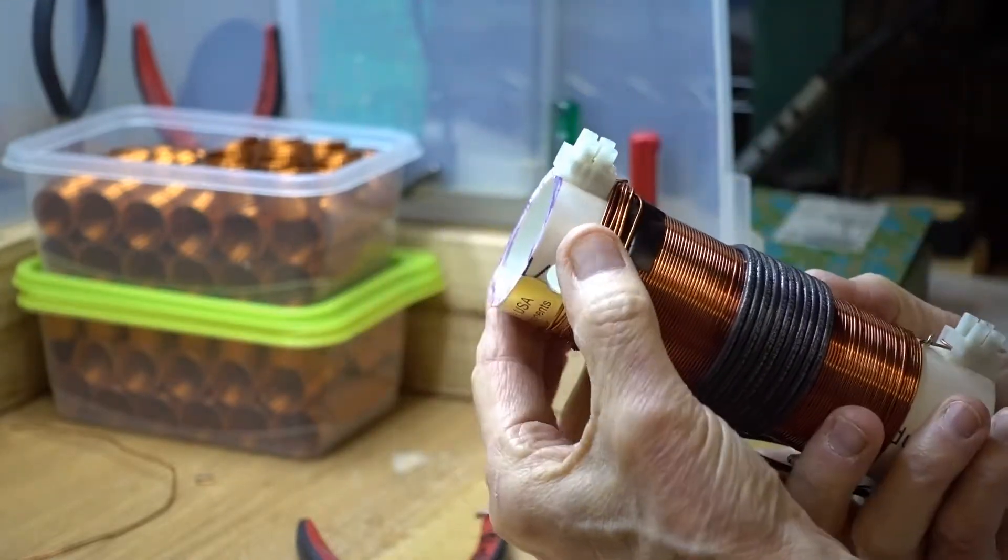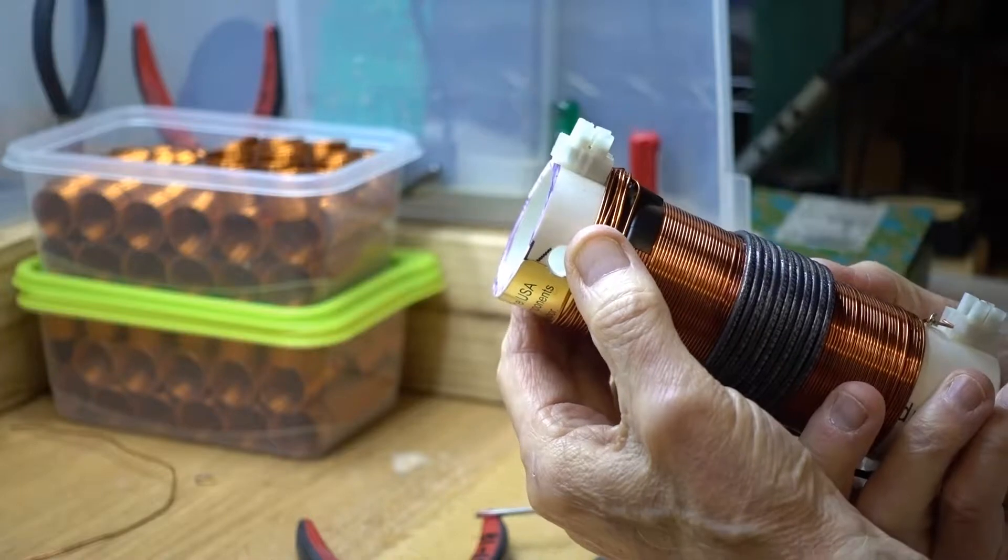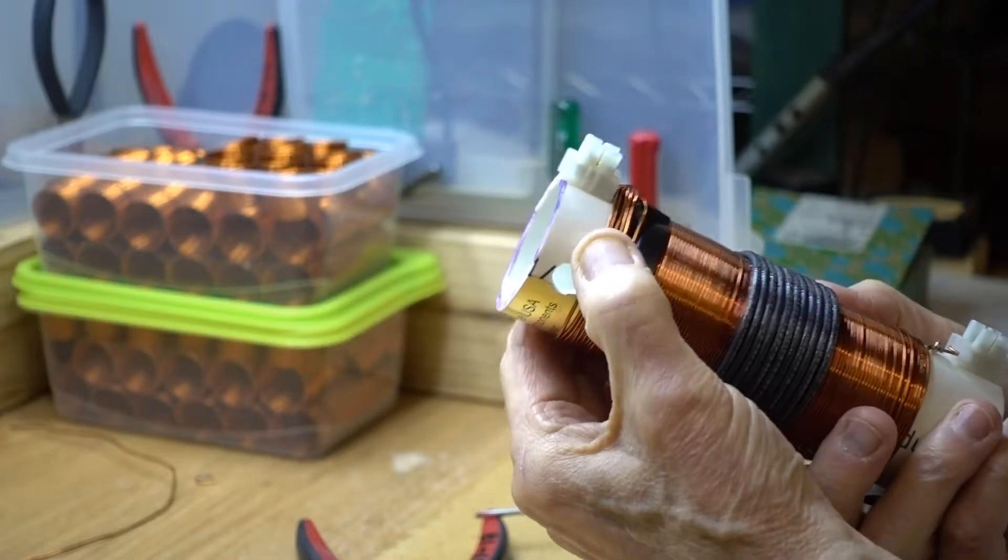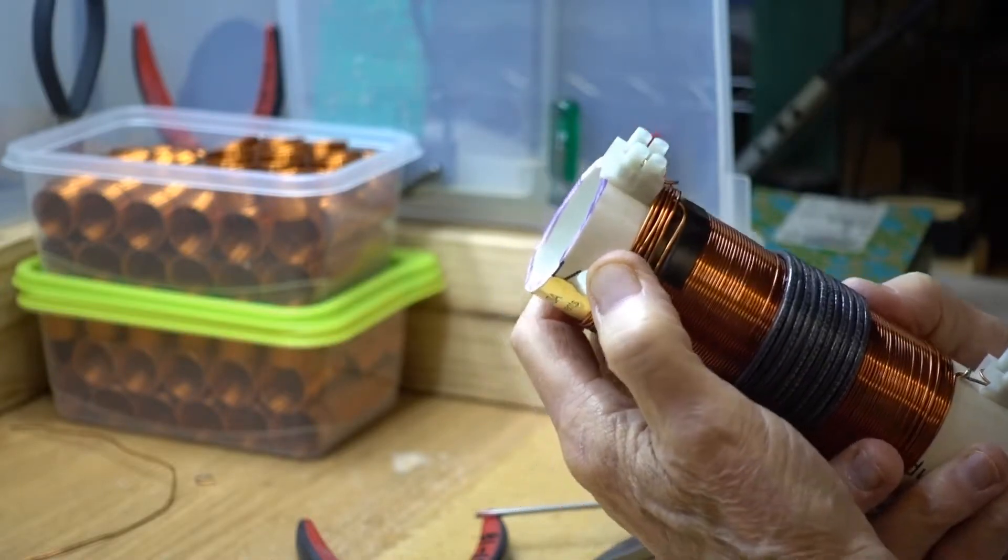If you don't have the exact type of wire that was used on the coil, any standard insulated wire will do. You just want about a half a dozen turns there.